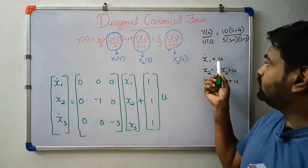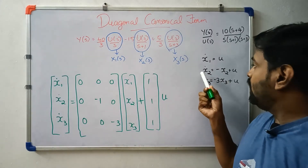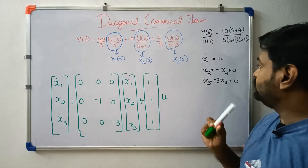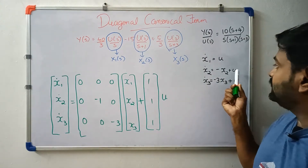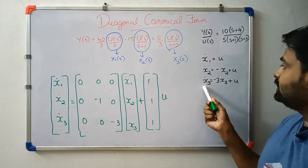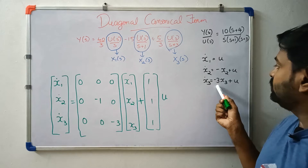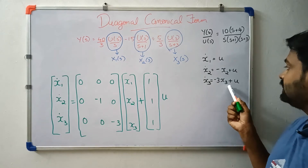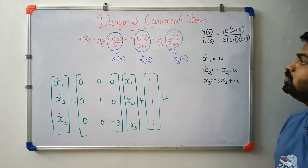Summary of state equations: x1 dot is equal to u, x2 dot is equal to minus x2 plus u, and x3 dot is equal to minus 3x3 plus u.